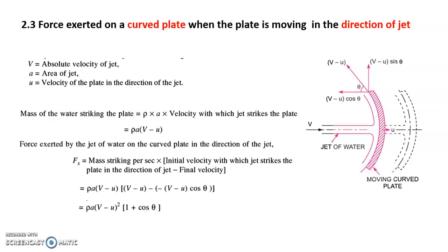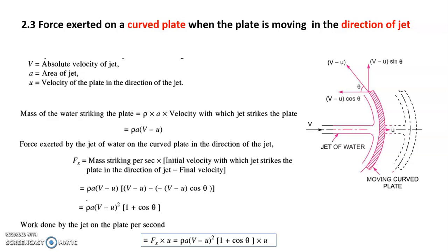For Fy: the initial velocity in the y-direction before striking is zero, and after striking it is v minus u sine theta, giving Fy equals minus rho times a times (v minus u) squared times sine theta. To calculate work done we use Fx in the direction of the jet. Work done per second (also equal to power) is Fx times u, which is rho times a times (v minus u) squared times (1 plus cos theta) times u, where u is the velocity of the plate in the direction of the jet.